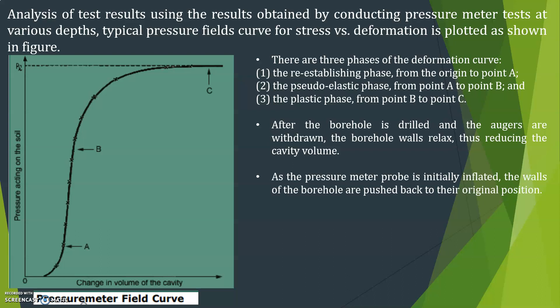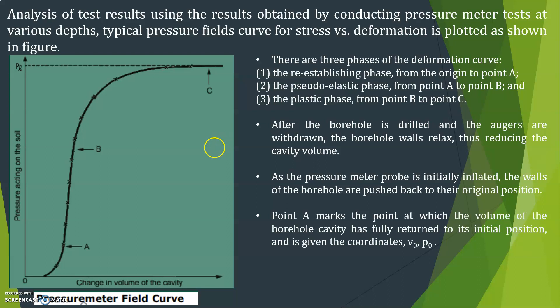As the pressure meter probe is initially inflated, the walls of the borehole are pushed back to their original position. Point A marks the point at which the volume of the borehole cavity has fully returned to its initial position and is given the coordinates V0, P0.